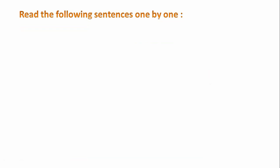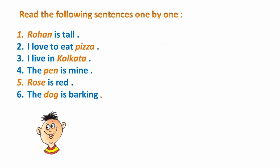So first, read the following sentences one by one. Number one: Rohan is tall. Number two: I love to eat pizza. Number three: I live in Kolkata. Number four: The pen is mine. Number five: Rose is red. Number six: The dog is barking. So there are six sentences.